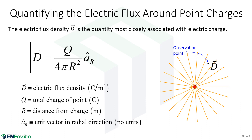We'll derive this in a bit, but here's the equation we're going to use to calculate the electric flux. It has four terms in it — we'll go through this one term at a time. The first is Q, the amount of charge — the point charge that creates the electric flux. This has units of Coulombs. If we had a negative charge, it would be a negative number with Coulomb units.